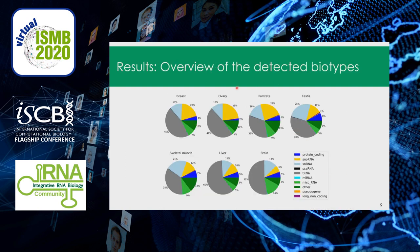I'll start with a brief overview of the RNA biotypes detected in all the tissues. Each pie chart represents one average tissue, and each color represents the proportion of total abundance associated with one RNA biotype. Transfer RNA in gray are the most abundant RNA biotypes in all tissues sequenced, as expected. The second and third places interchange between snRNA in pale blue and snoRNA in yellow. snoRNAs are highly abundant across all tissues sequenced.